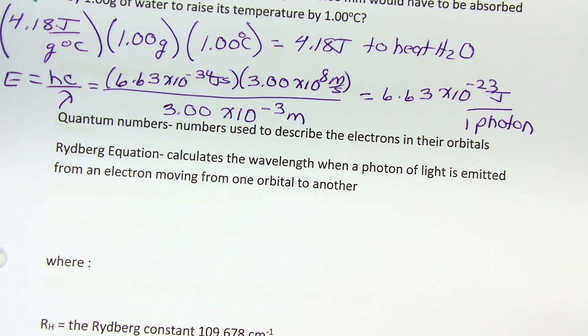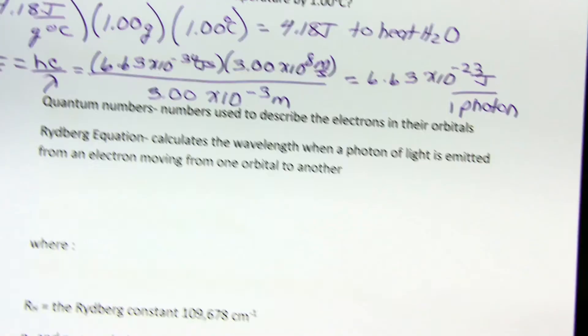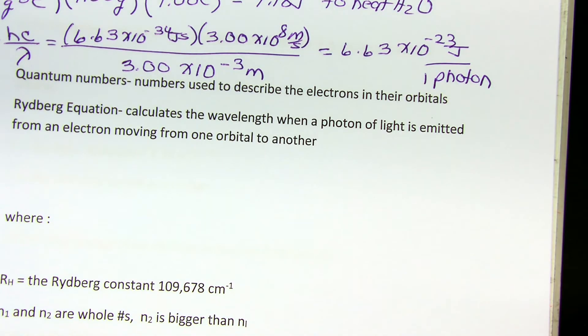The first quantum number is the principal quantum number n. N tells us which principal or main energy level the electron is existing in. In your introductory classes, they should have talked to you at some point about the structure of an atom. We have the dense nucleus containing protons and neutrons, and somewhere out and around the nucleus we have electrons.